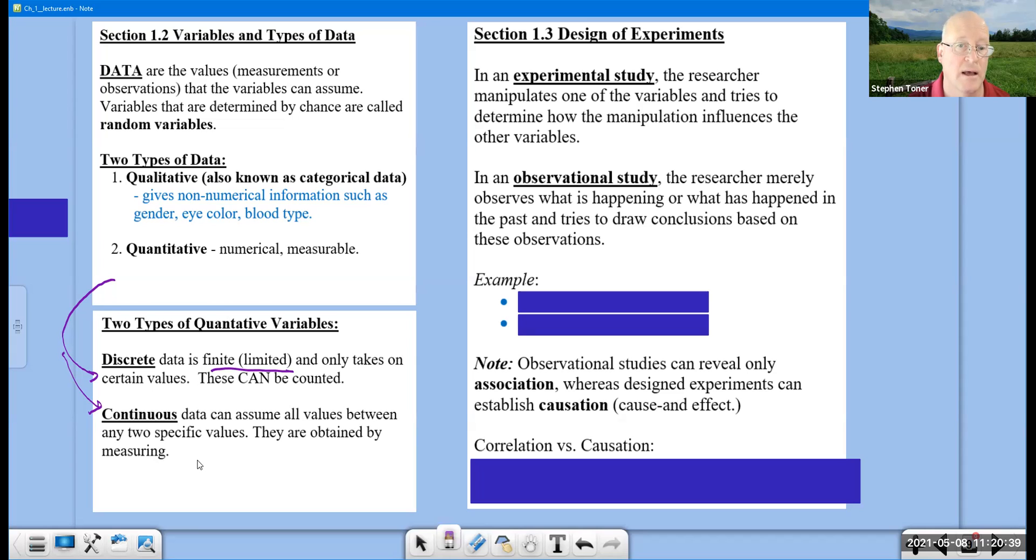Continuous data can assume all values between any two specific values, and they're found by measuring. On a number line between zero and one, there are infinitely many numbers because we're not necessarily rounding to the nearest tenth or quarter. The key idea here is: is it measurable without rounding?